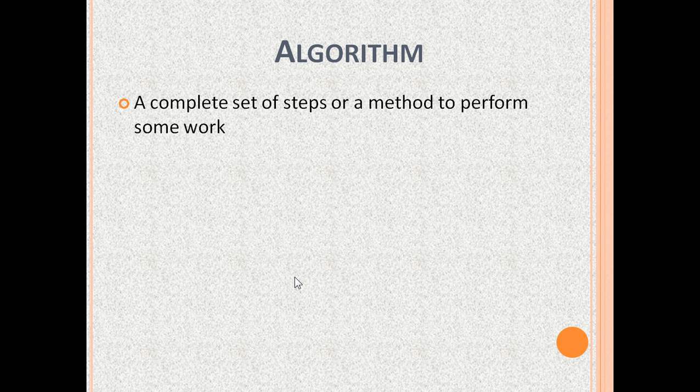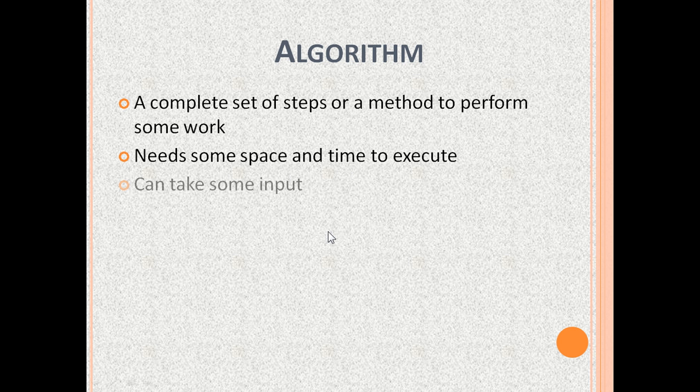An algorithm needs some space and some time to execute. An algorithm typically takes some input. An algorithm produces some output.